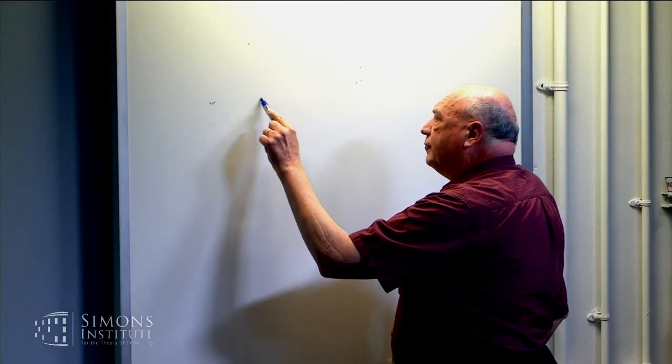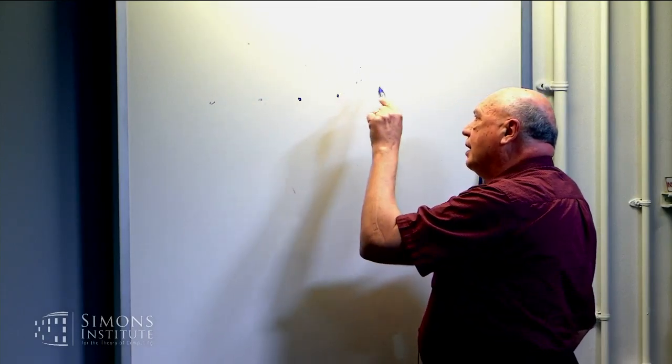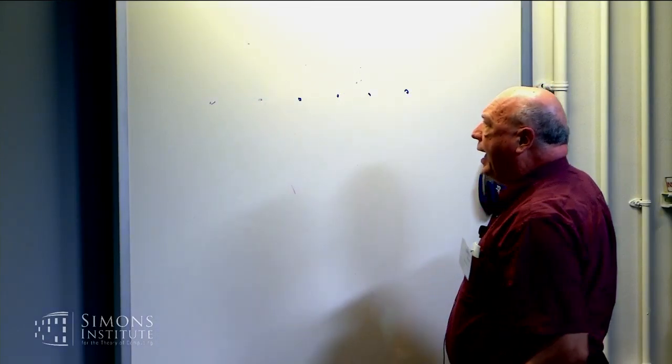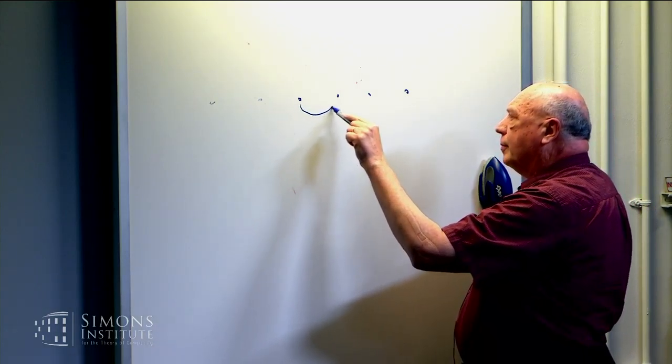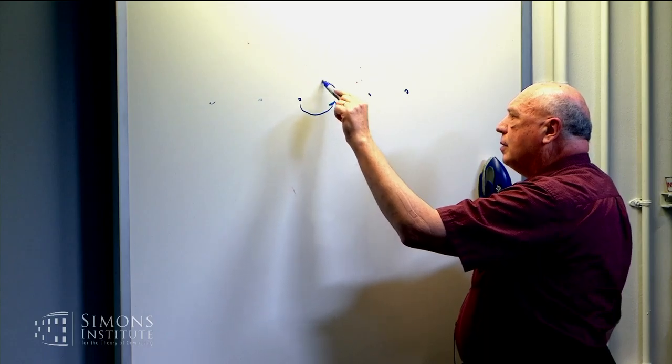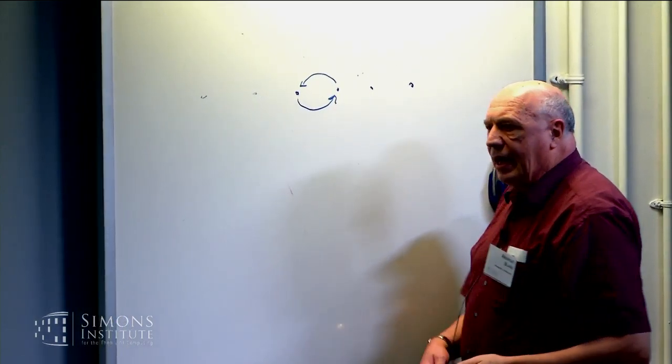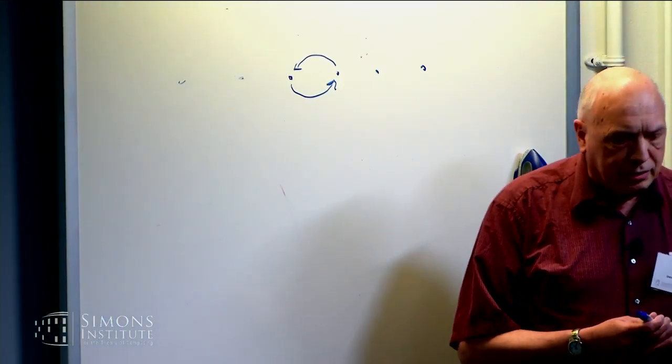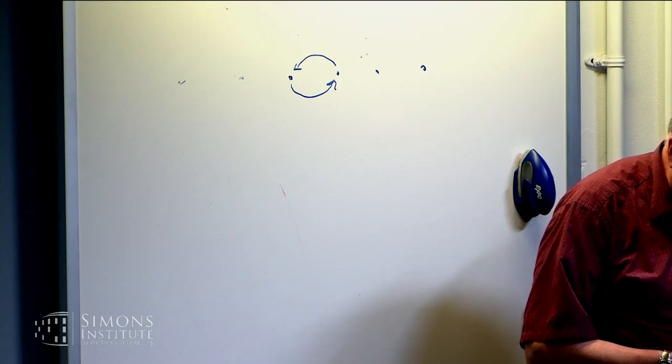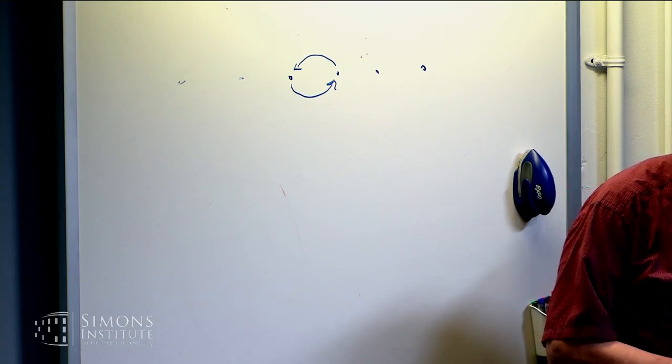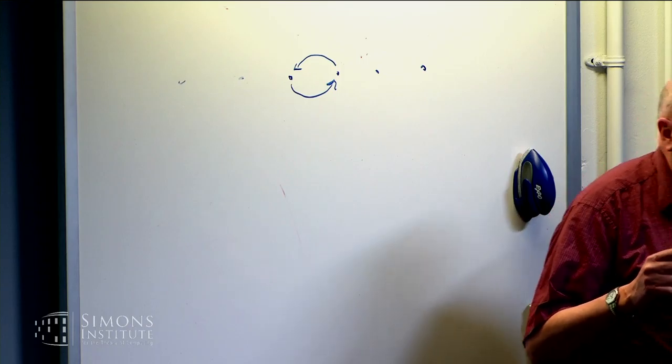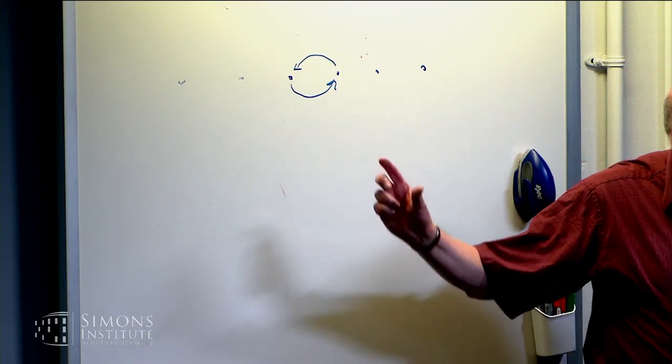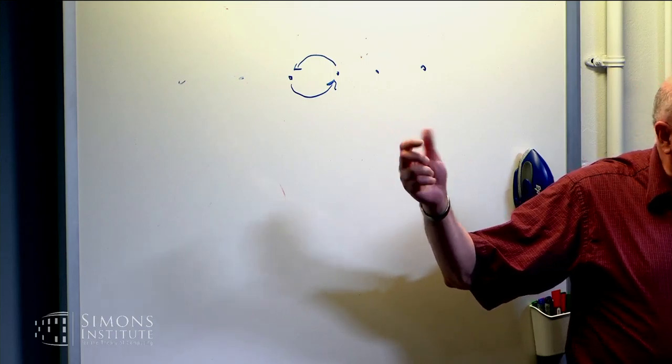And if you have several of them sitting here, and you, for instance, interchange the position of two of them, move this one to here and move that one to there, if these were anyons of the same sort, the final state looks just like the initial state. Quantum mechanics says state is determined by a Hilbert space vector up to a phase factor. This can produce a different phase factor.